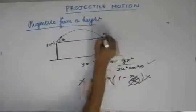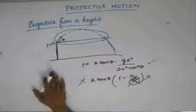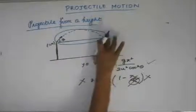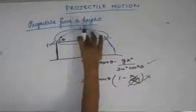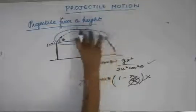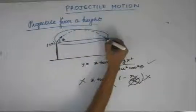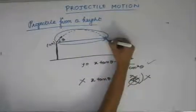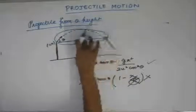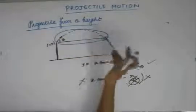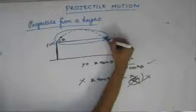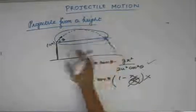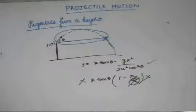For the first part of the motion, all the equations we derived earlier are valid because the particle is projected from and returns to the same horizontal surface. So, we can calculate the time of flight and range for that part. For the extra part, I know the vertical velocity of the particle at the same vertical height — only the sign changes — and I know the height, so I can calculate the time taken to cover that distance vertically. The total time of flight is the addition of both times. This is the second approach.